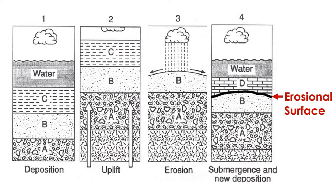We call the contact boundary between stratum B and stratum D an erosional surface as it records when and where the layers were exposed above water and rock layers like stratum C were destroyed.